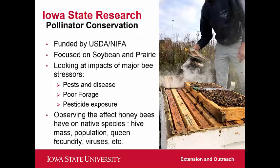We measure honeybee and native bee health in several ways. Indicators include hive mass — the weight of the hive tells us how much nectar they're collecting, how much honey they're storing, and how big their population is. Generally, the heavier the hive, the healthier the hive. We're also looking at populations within hives, and for native bees, collecting population samples at research sites. We're looking at queen fecundity — how many eggs the queen is laying — and virus transfer between species.